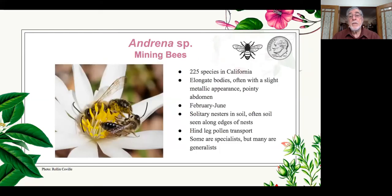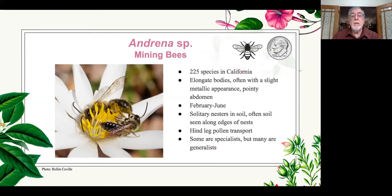I'm going to go through the various kinds of bees, the groups. There are bees like the Andrenid bees, which are the mining bees. They only appear in the spring months of the year and then they disappear for the rest of the year — they do their thing, they reproduce, and then they sit in their various places where they prefer to overwinter.